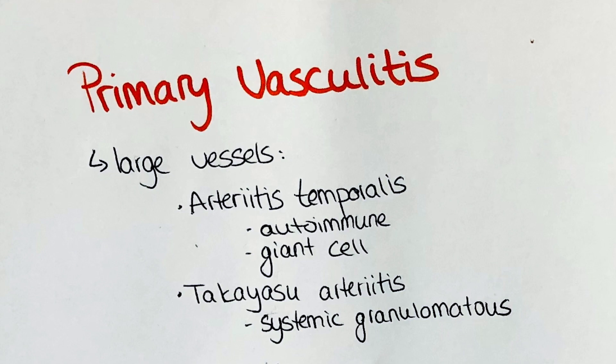Takayasu arteritis is a systemic granulomatous vasculitis which mainly affects the aorta and the branching of large arteries. It is a rare autoimmune disorder with peak appearance in China, India, Thailand, Africa and South America, affecting primarily women. In this disease, granulomas are formed in the walls of the elastic blood vessels, which leads to scar tissue formation and decreases the size of the lumen.